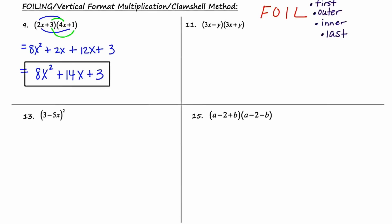In number 11, we're also multiplying two binomials. Something interesting happens here, but we'll discuss that at the end. Using the traditional FOIL method: the first two terms, 3x and 3x, give 9x squared. The outer, 3x times y, gives plus 3xy. The inner, negative y times 3x, gives negative 3xy. And last, negative y times positive y, gives negative y squared.